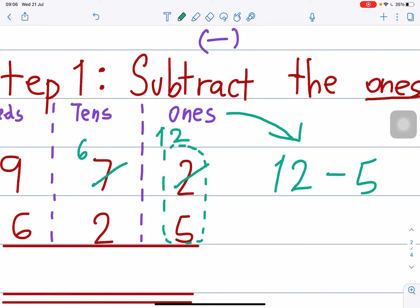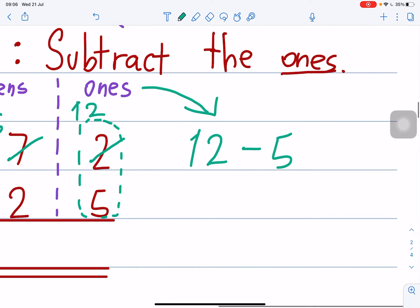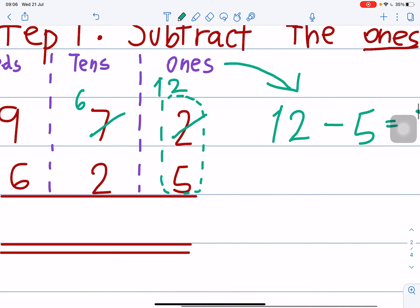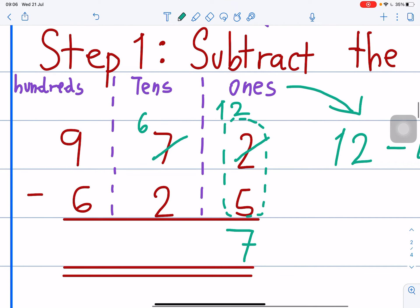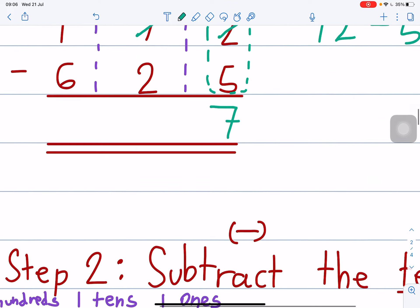So, in the ones table here, 12 minus 5. Place value ones. Sorry, sorry. Place value. Place value ones. 12 minus 5. Is equals to 12, 11, 10, 9, 8, 7. And then, you write your answer here, 7. Step 1, finished.